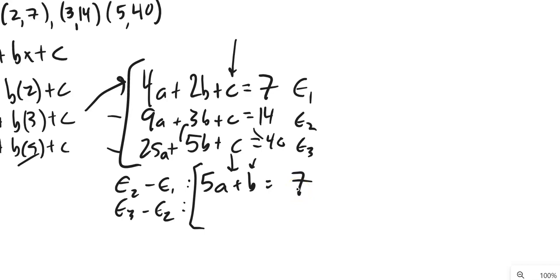Let's do the next one, e3 minus e2. So, 25 minus 9, that's 16. 5b minus 3b, that's 2b. 40 minus 14, that's 26. Okay, that's good. Great.